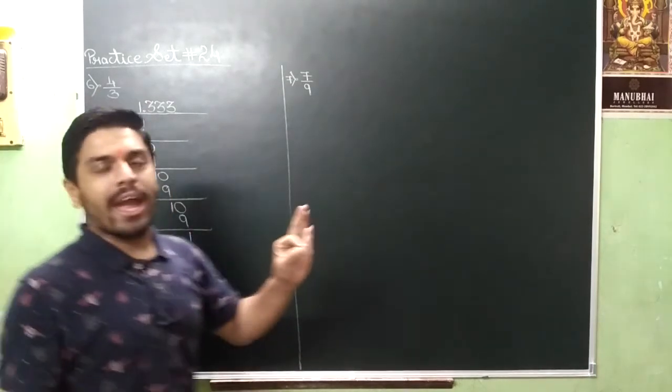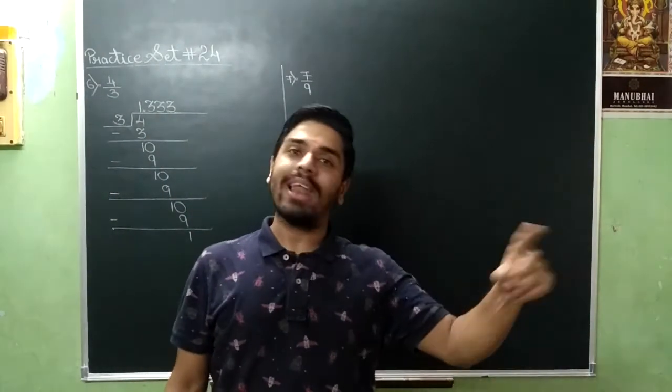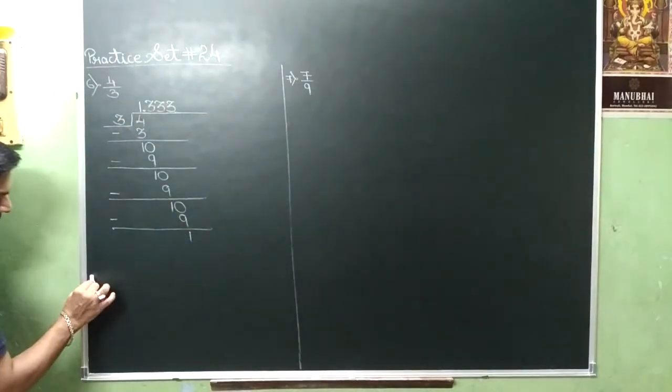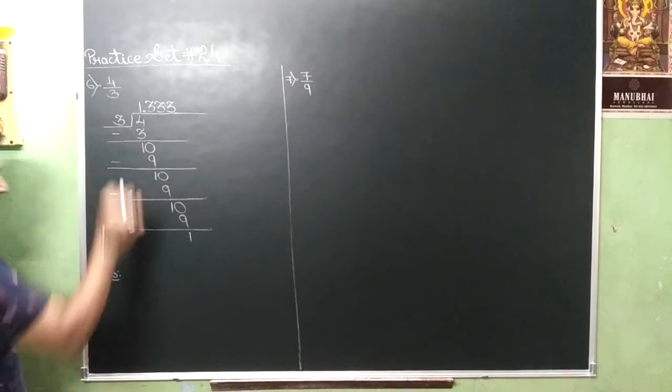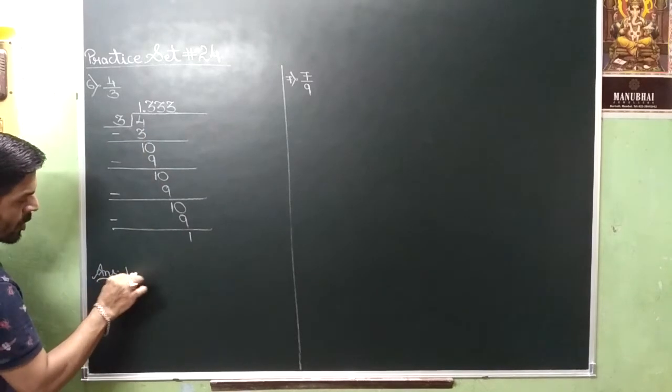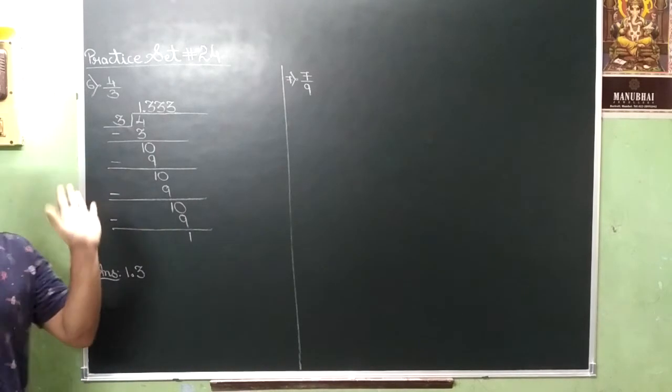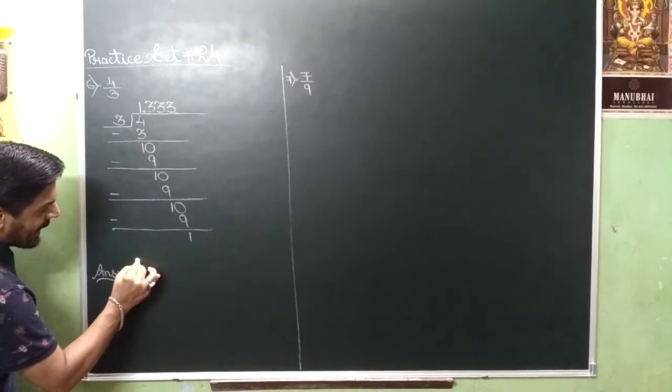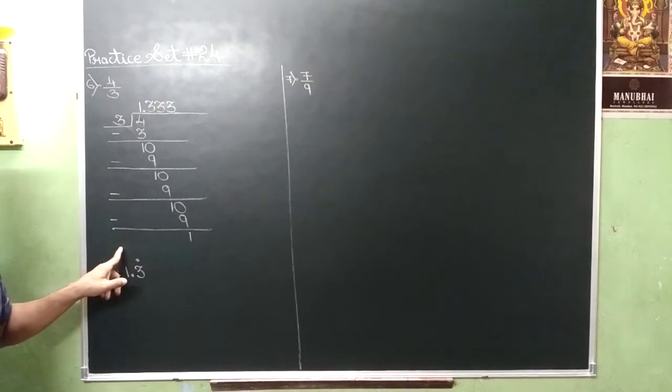3 which is non-stop re-occur, recurring, correct? Isi liye in numbers ko ab kahe nahi divide karenge. And you will be writing the answer as 1.3. So you will be applying a dot that is 1.3 recurring.